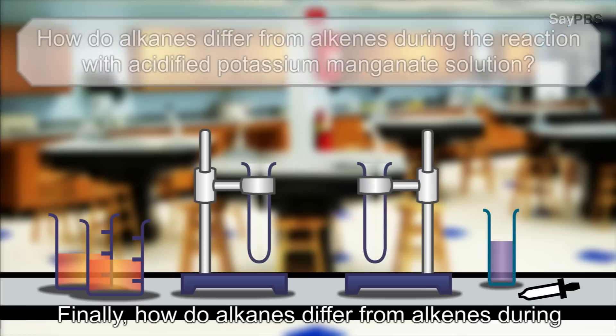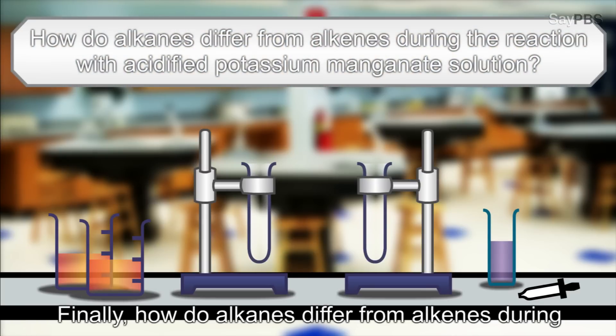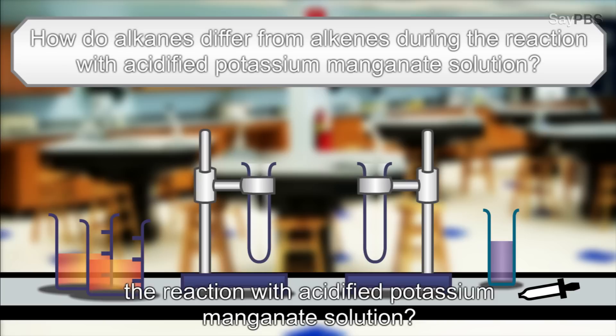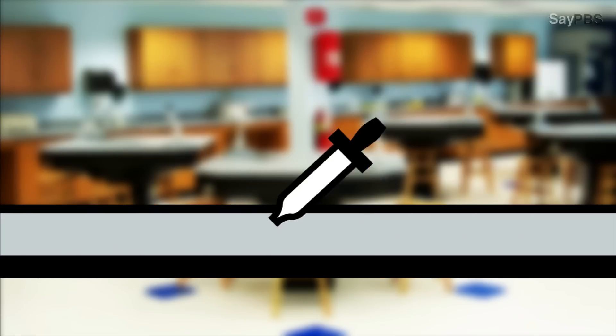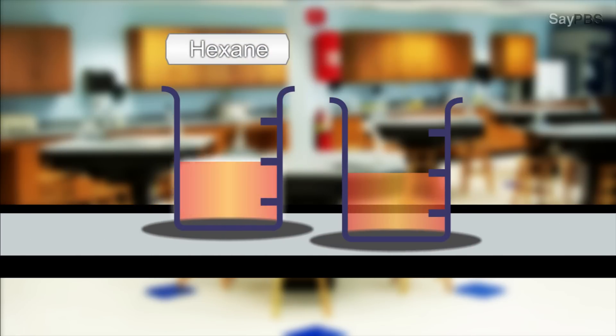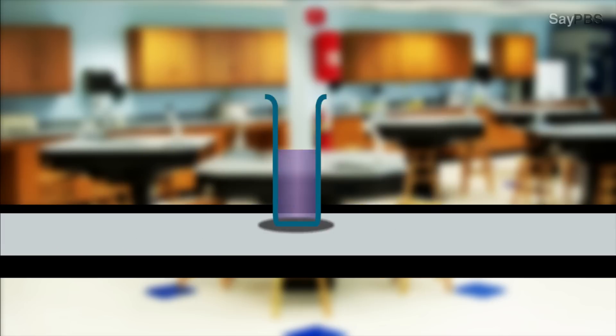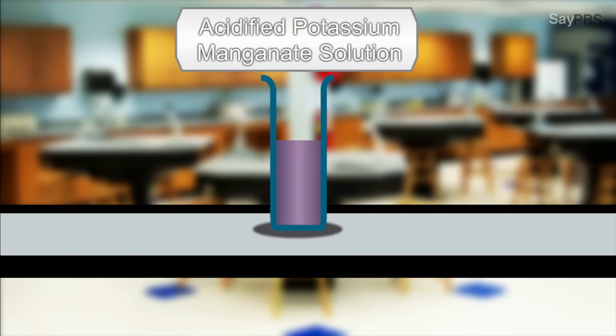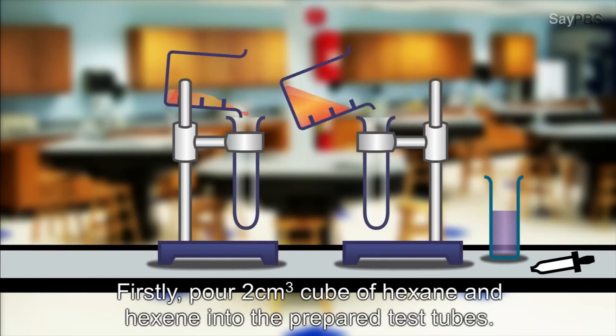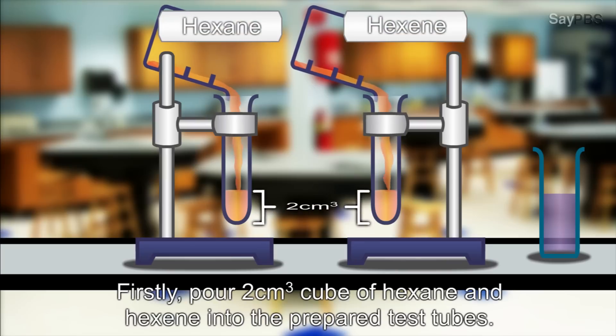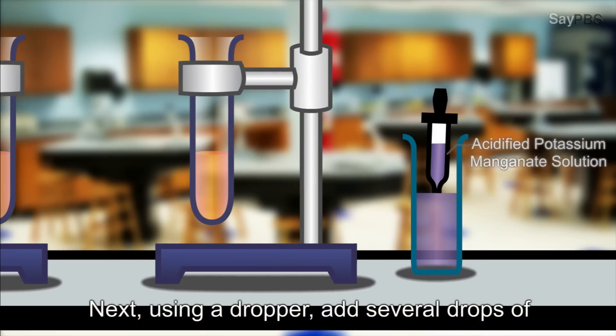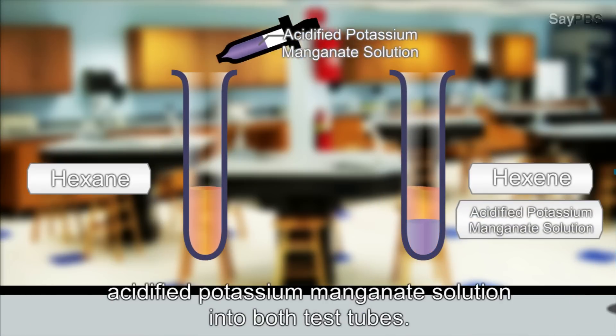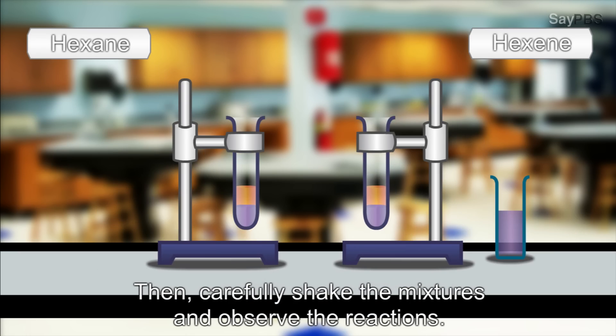Finally, how do alkanes differ from alkenes during the reaction with acidified potassium manganate solution? The apparatus needed for this experiment are test tubes, dropper, hexane, hexene and acidified potassium manganate solution. Firstly, pour 2 cubic centimeters of hexane and hexene into the prepared test tubes. Next, using a dropper, add several drops of acidified potassium manganate solution into both test tubes.